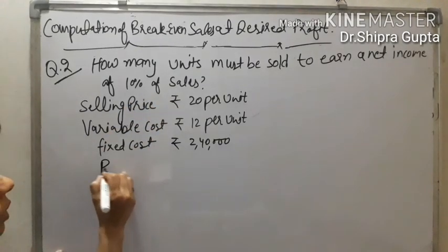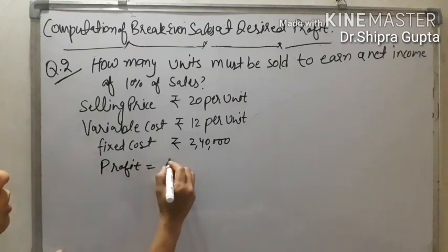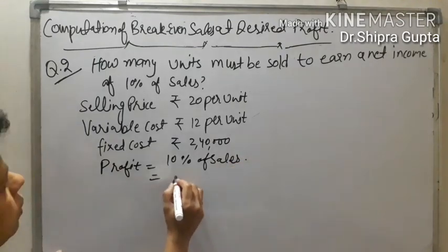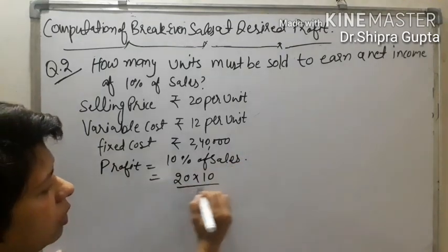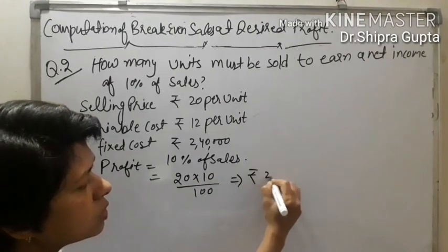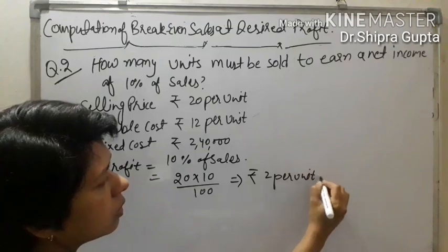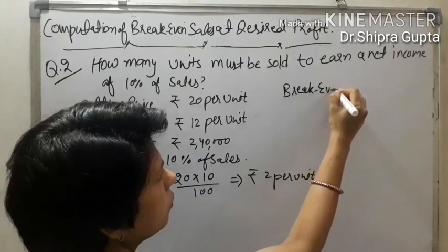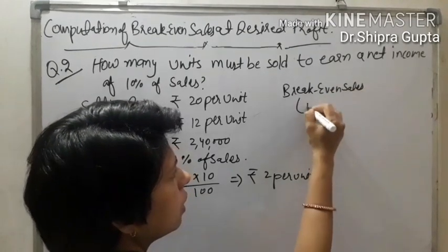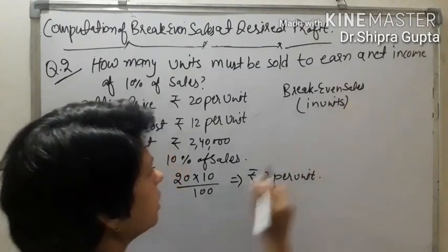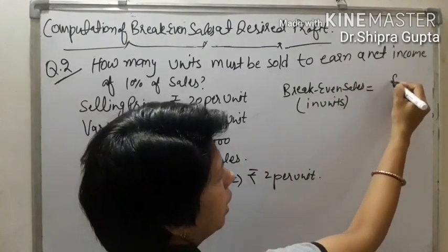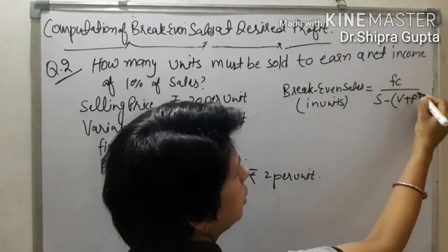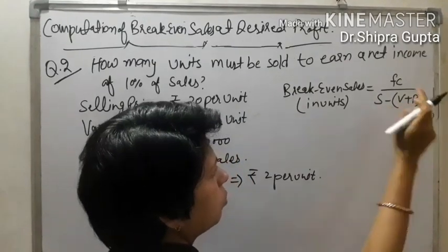First, we calculate profit per unit: P = 10% of Sales = 20 × 10/100 = rupees 2 per unit. Now we apply the formula for break-even sales in terms of units: Break-Even Units = Fixed Cost / (S − V + P), where S is selling price, V is variable cost, and P is profit per unit.